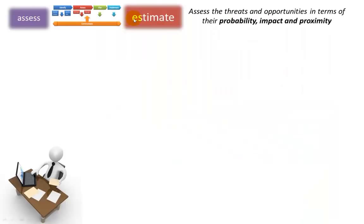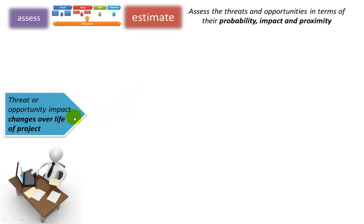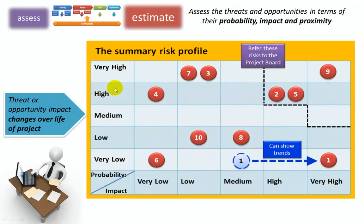The next step is assess, which has two sub-steps. The first is estimate: to assess the threats and opportunities in terms of their probability, impact and proximity. The threat or opportunity impact changes over the life of the project, either due to internal or external situations. One way to plot how serious each risk is uses a summary risk profile — a simple matrix of probability from very high to very low against impact very low to very high, where each red button represents a particular risk number. You can set where risk tolerance is, and any risks outside that need to be escalated or dealt with — the idea being to get these back closer to the origin. This can accompany highlight reports to the project board to show trends.